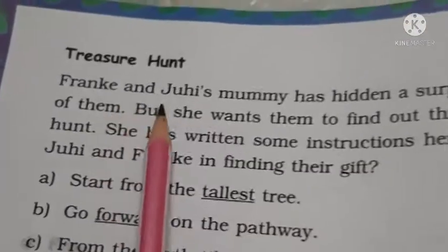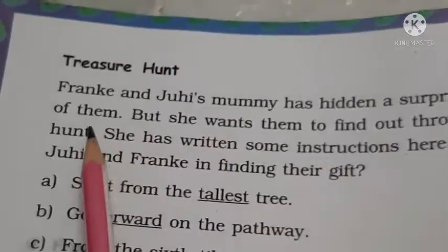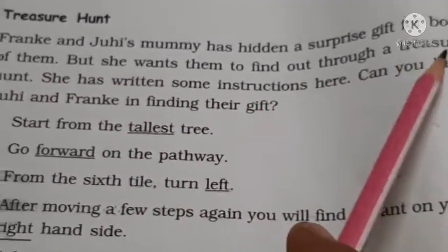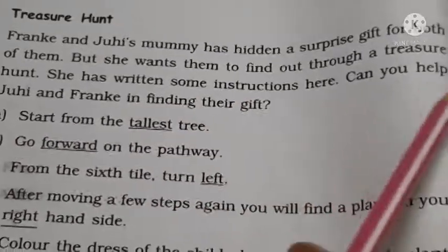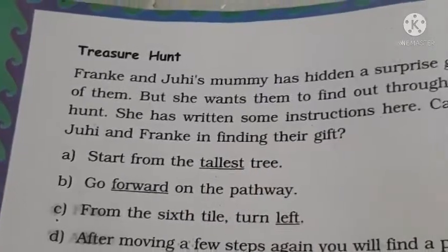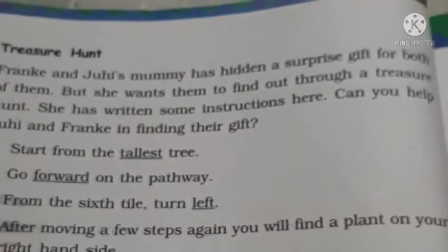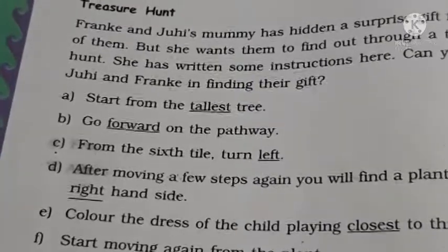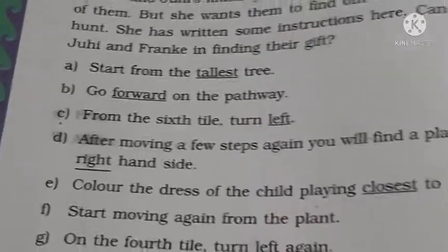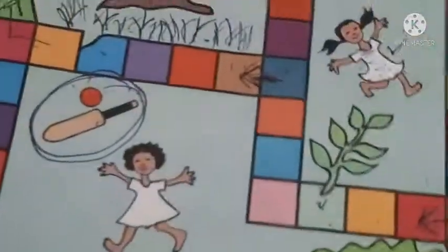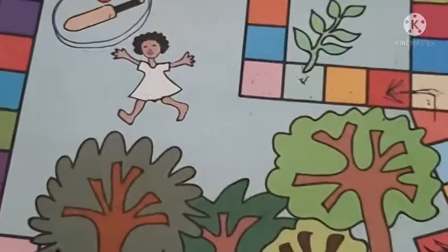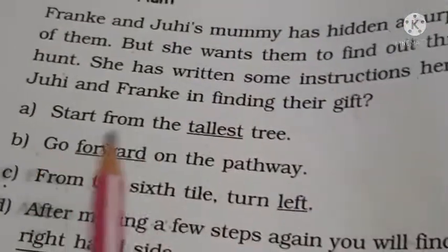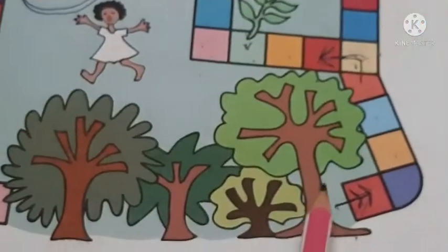Frankie and Joie's mommy has given a surprise gift for both of them, but she wants them to find it through a treasure hunt. She has written some instructions. Can you help Joie and Frankie find their gift? Instruction A: start from the tallest tree. On page 75 you can see many trees, but this is the tallest tree, so we will start here.